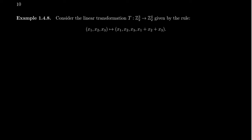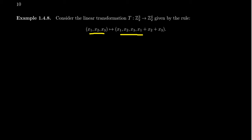Let's do one other example. Consider the map T from Z₂³ to Z₂⁴. This means we're going to take binary vectors — entries are either 0 or 1 — with three of them. So we have a sequence of three binary numbers, or bits in computer lingo. Z₂⁴ would be four bits of information. The rule is: (x1, x2, x3) maps to (x1, x2, x3, x1+x2+x3). This is a linear transformation because each component is a linear combination of the input variables; we can also show it directly by verifying it preserves addition and scalar multiplication. Can we show it's one-to-one or onto?